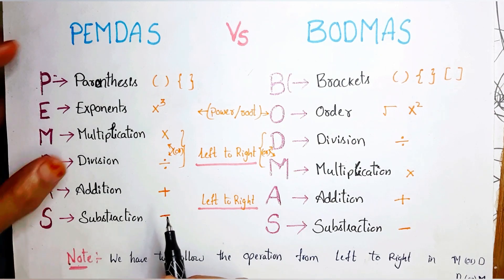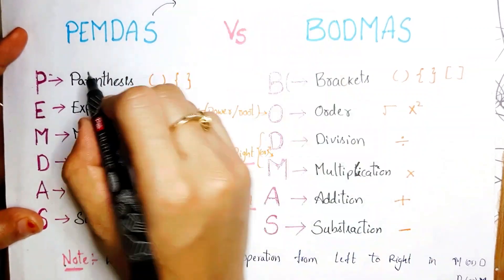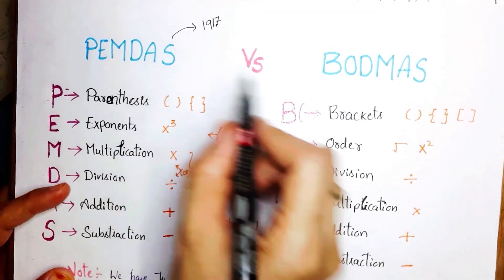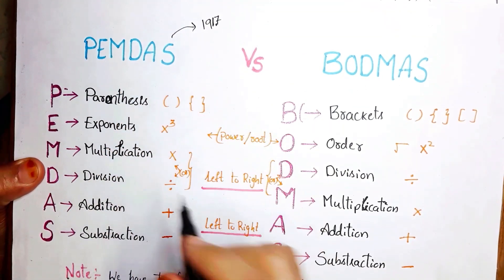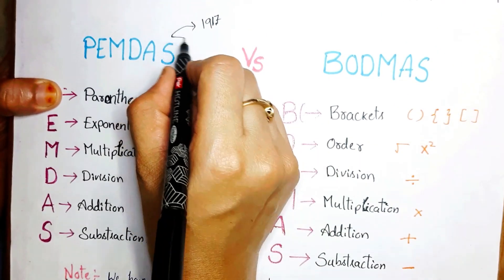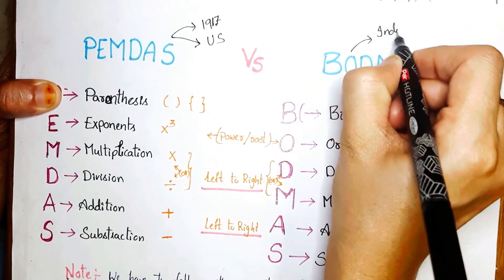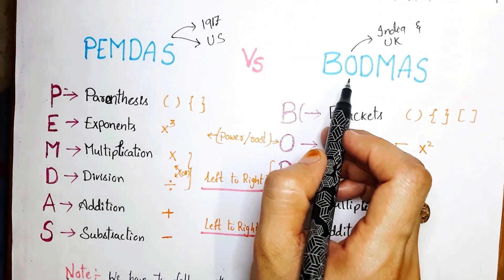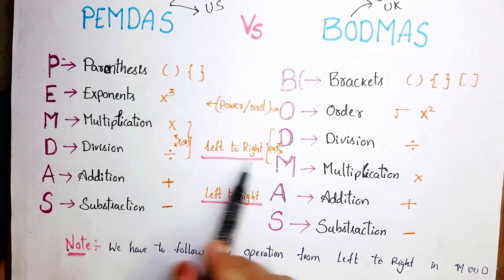Now I'll tell you when PEMDAS originated and who uses it. PEMDAS came into existence in the year 1917 and was used as the order of operations. Then BODMAS came and everyone followed BODMAS. PEMDAS is used by US citizens — the United States — whereas BODMAS is used by Indian and United Kingdom citizens.